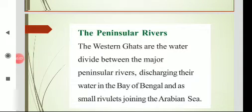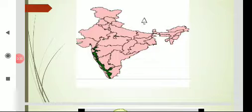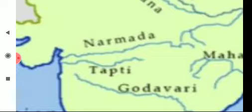Many of the peninsular rivers originate in the Western Ghats, which are the water divide between the major peninsular rivers discharging their water into the Bay of Bengal and small rivulets joining the Arabian Sea. You can observe here the Western Ghats marked on the Indian map. Two rivers — Narmada and Tapati — are flowing towards west, flowing through the areas of Madhya Pradesh to Maharashtra, and then falling into the Arabian Sea. Narmada and Tapati are the two rivers which are west flowing.